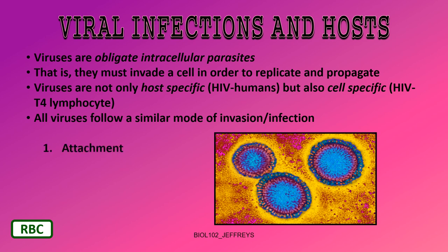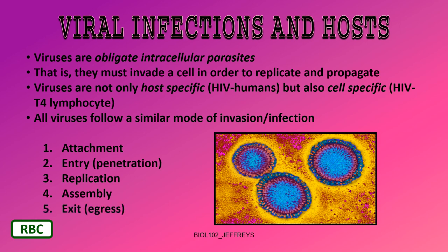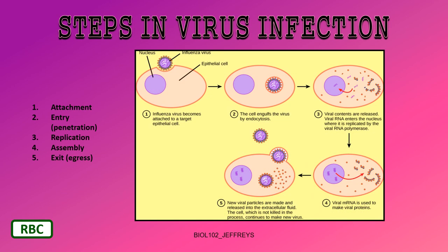The general steps of viral infection are: first, attachment; second, entry (sometimes called penetration); third, replication — of the capsid proteins (capsomeres) and the genome; fourth, assembly — putting everything together into a new virion; and fifth, exit or egress. Let's look at these steps individually using the influenza virus as an example.